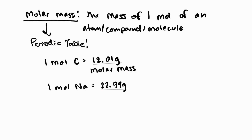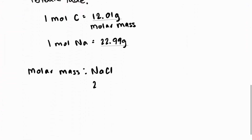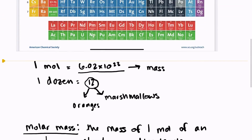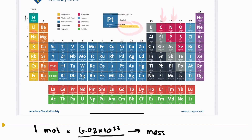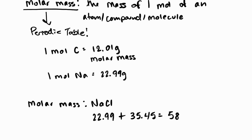Things get a little more complicated, but not much, when we look at compounds or molecules. For example, what is the molar mass of the compound salt, sodium chloride? All we have to do is look at the periodic table. Sodium is number 11 with a mass of 22.99, plus the mass of chlorine, which is number 17 with a mass of 35.45. So the molar mass is 58.44 grams per mole — there are 58.44 grams in one mole of NaCl.